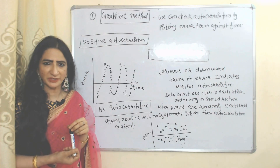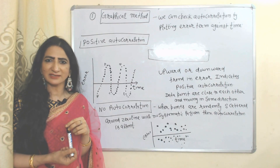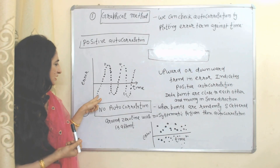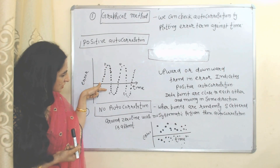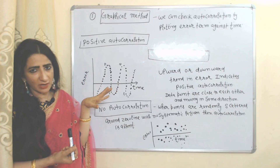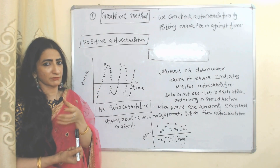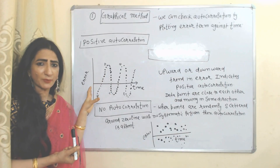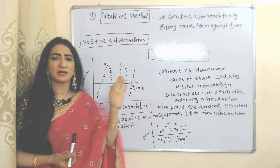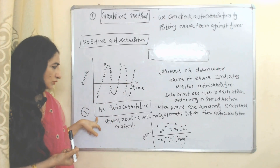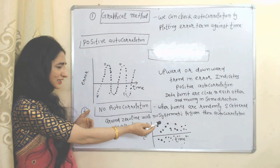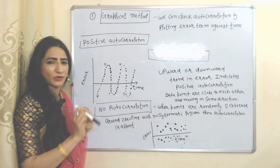First of all, we will see the graphical method to check autocorrelation. We can check autocorrelation by plotting the error term against time. For positive autocorrelation, on the horizontal side we have time and on the vertical side we have the error term. From A to B shows an upward trend, B to C shows a downward trend, C to D shows upward, and D to E shows downward — this upward and downward trend shows positive autocorrelation because points are very close to each other and moving in the same direction, meaning error terms of different periods are related. For no autocorrelation, points are randomly scattered with no systematic pattern.